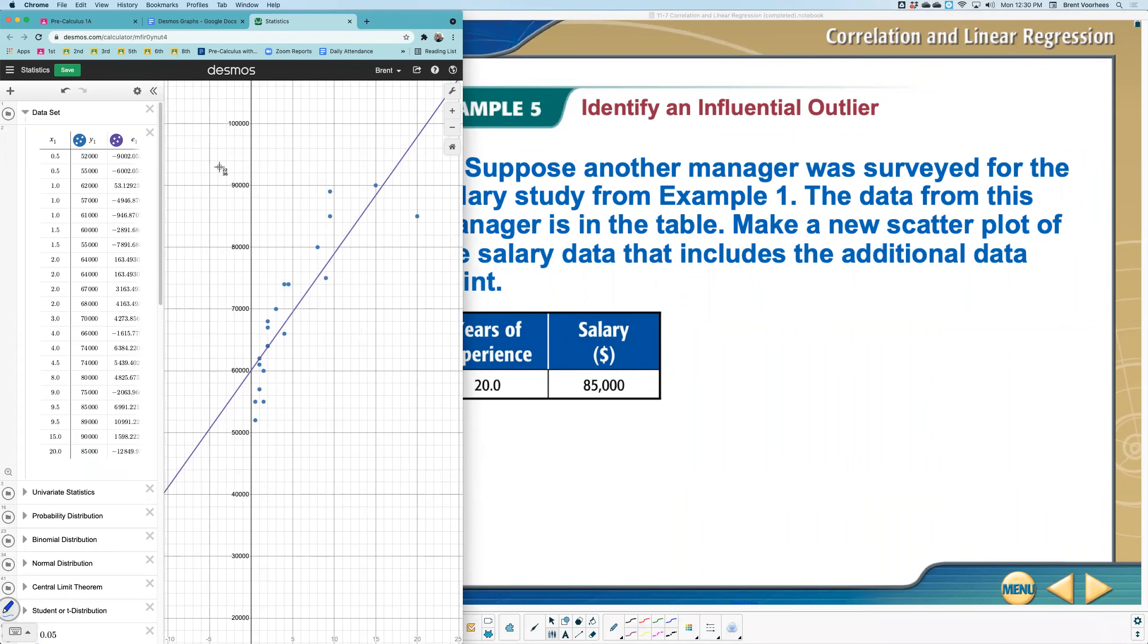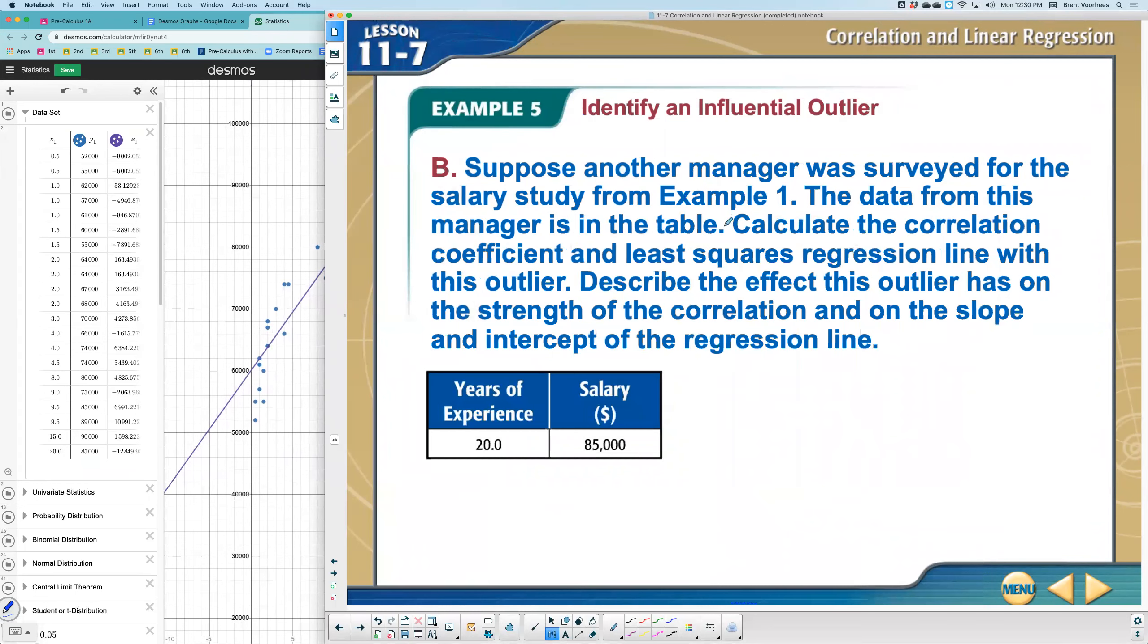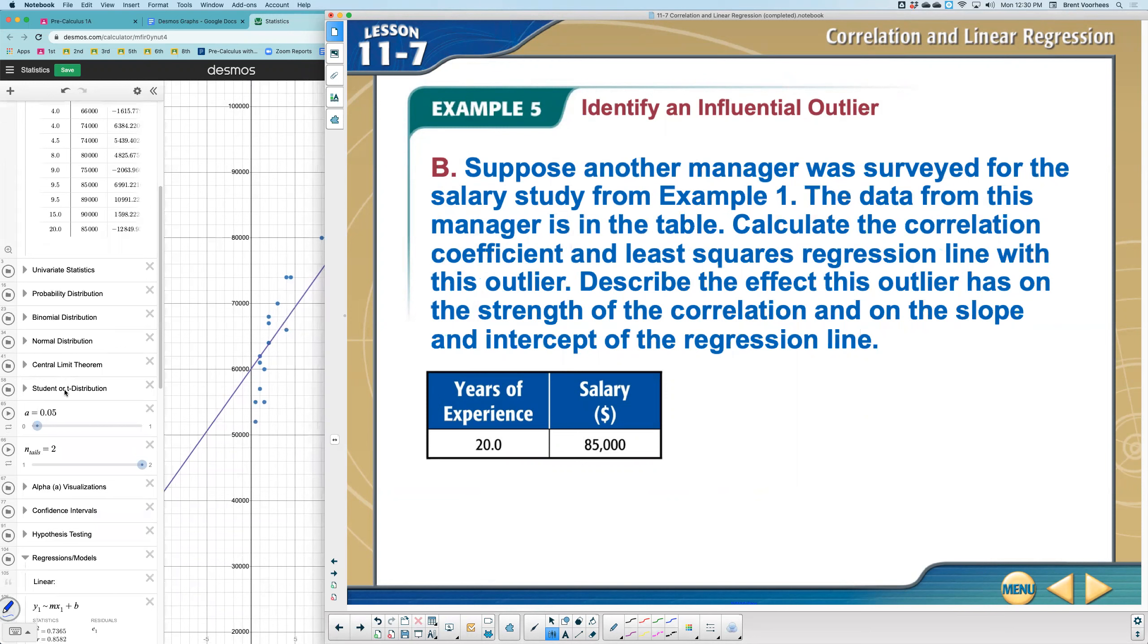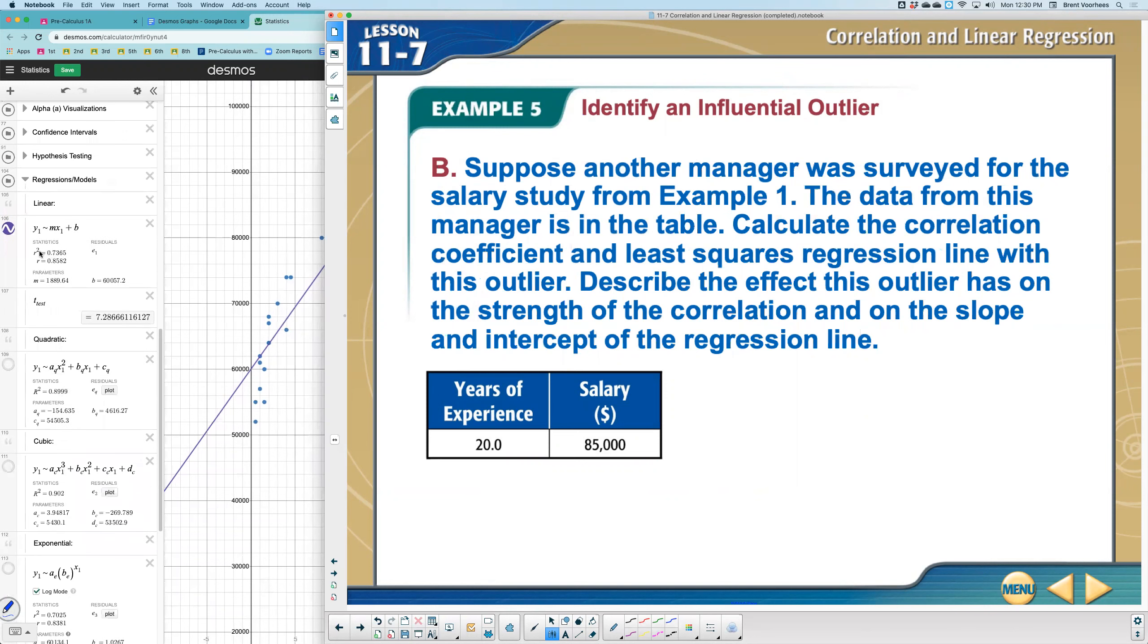And part B, it says calculate the correlation coefficient and the least squares regression line. So my correlation coefficient, that's the R. And so my correlation coefficient, let's just see here, the new R is approximately 0.8582.